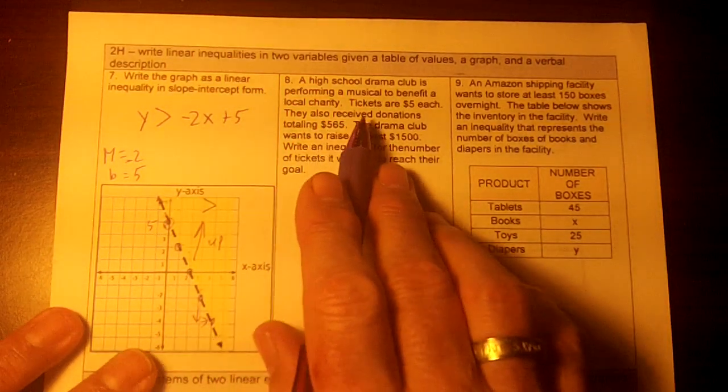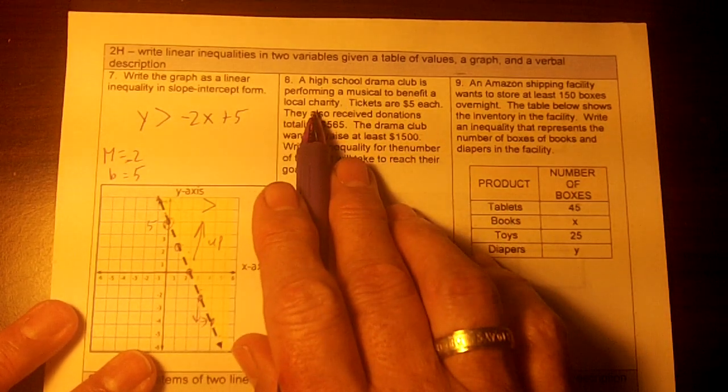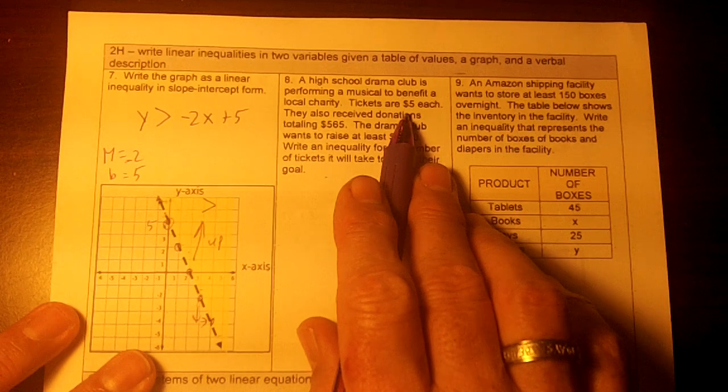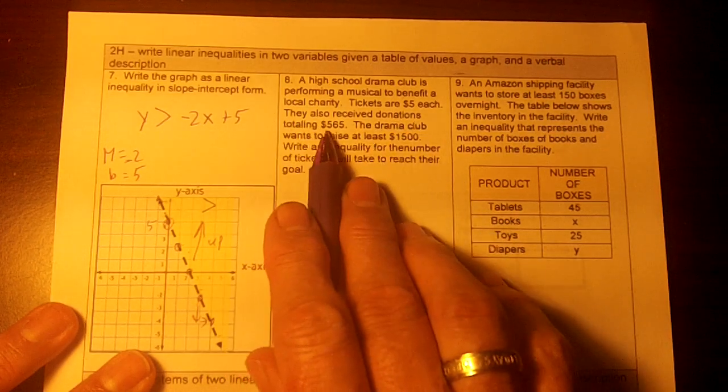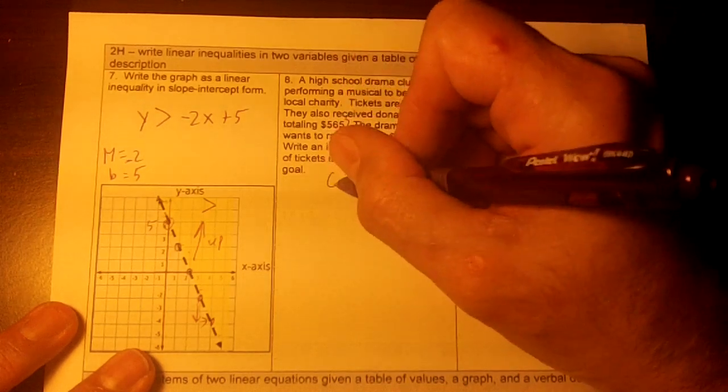Okay, on number 2, High School Drama Club is performing a musical to benefit a local charity. Tickets are $5 each. They also receive donations totaling $865. This will be our growing number, this will be our starting number, right?